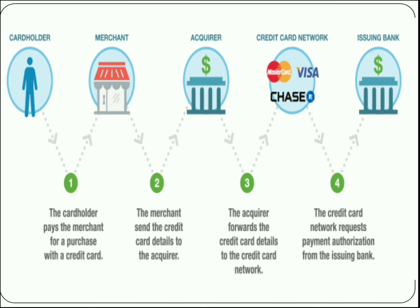Initially, the cardholder pays the merchant for a purchase with a credit card number. The credit card details are passed to the merchant. In the second step, the merchant sends the credit card details to the acquirer — that is, the merchant's bank. The acquirer bank forwards the credit card details to the credit card network, which deals with all types of credit cards issued by different banks. In the fourth step, it requests payment authorization from the issuing bank, directly connecting to the bank that issued the credit card.